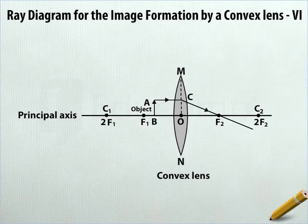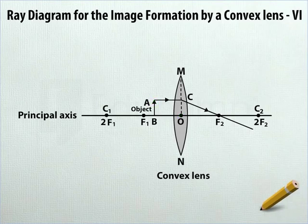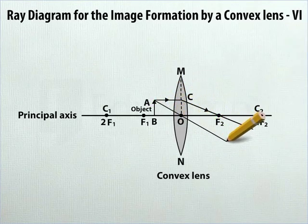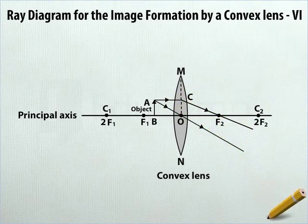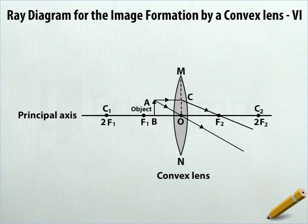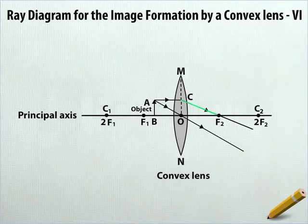From tip A of the object through O, draw another straight line. On both sides of O on this line, draw arrowheads pointing downwards to indicate the direction of the ray. This ray deviates away from CF2.